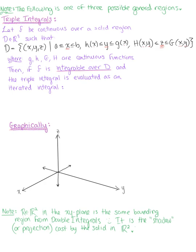So then, if F is integrable over this solid region D, then the triple integral can be evaluated as an iterated integral. So we can say that this triple integral over D of the function f of x, y, z, dV is equal to the integral from a to b.